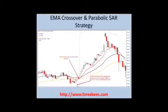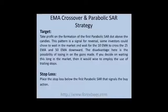At this point, this is where the first Parabolic SAR dot is formed. Then at this point, the 10 EMA has finally crossed the 25 EMA and is above all the moving averages — that means this is your buy signal. For take profit, target the formation of the first Parabolic SAR dot above the candles, as this pattern is a signal for reversal.